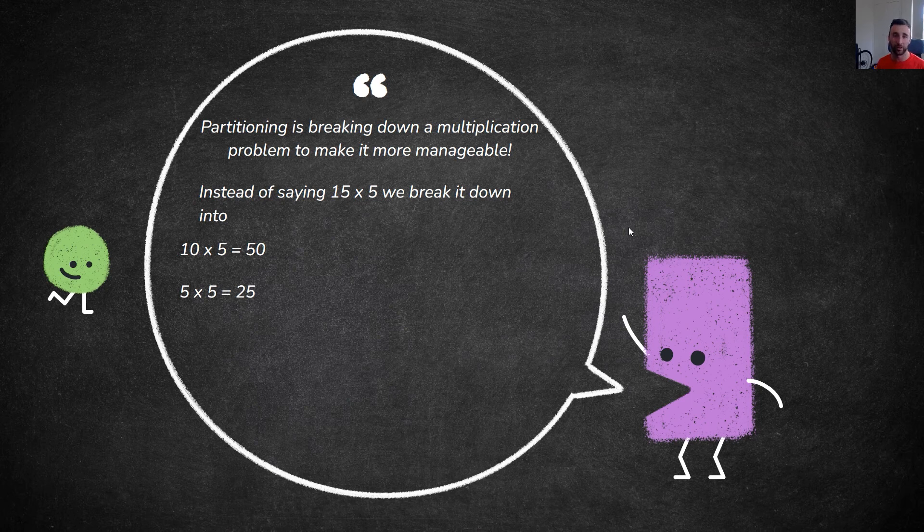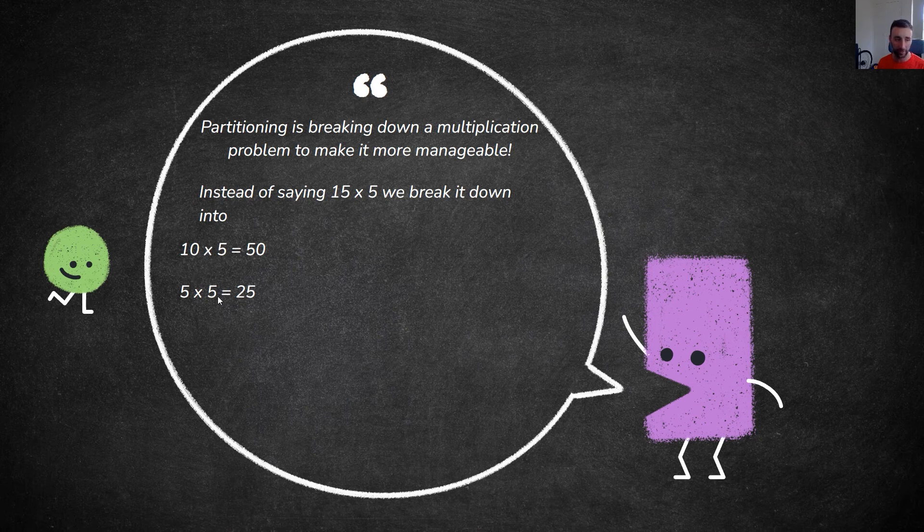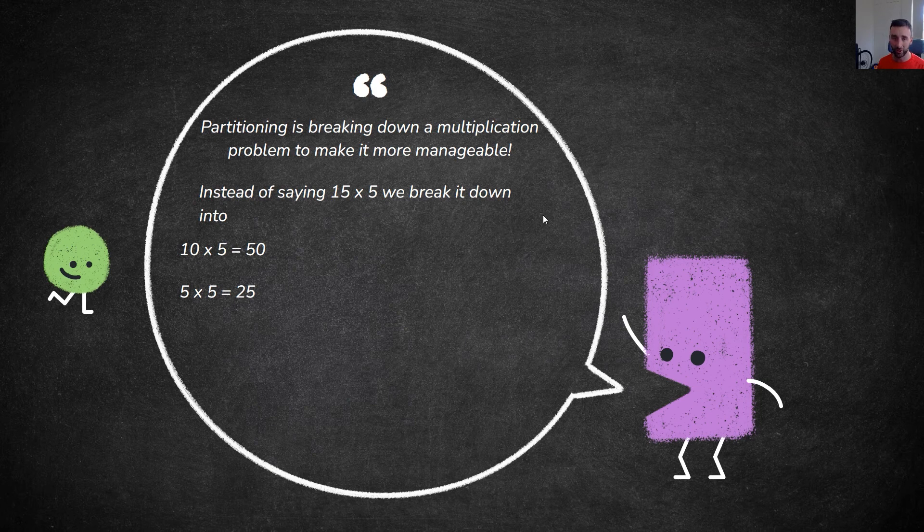We use the place value of the number, so we've got a 10 and a 5, the tens and units there. We break them up, keep the number we're multiplying by the same, then add the two results together. So we've got 50 and 25 which equals 75.